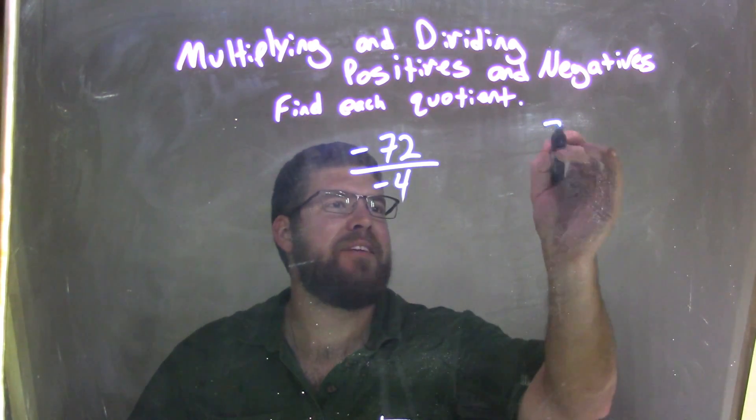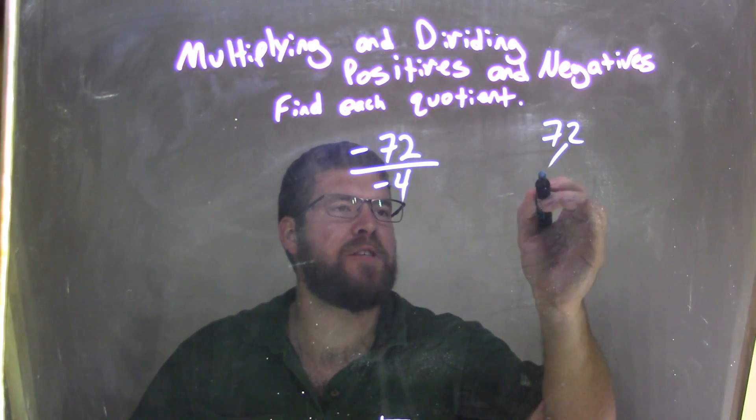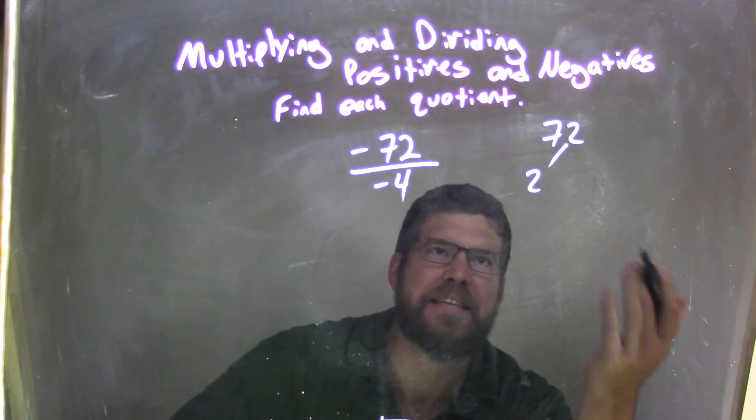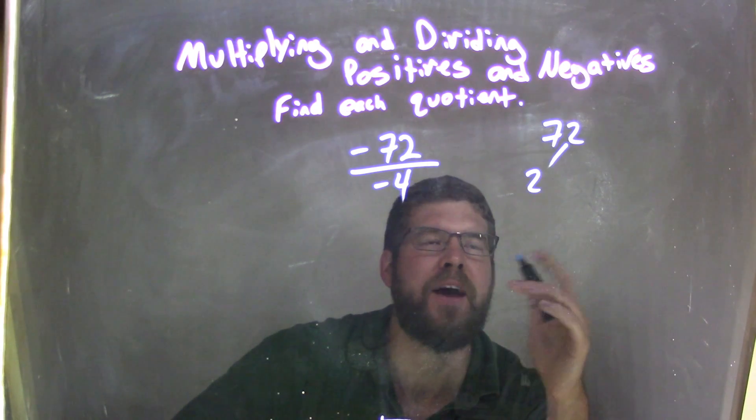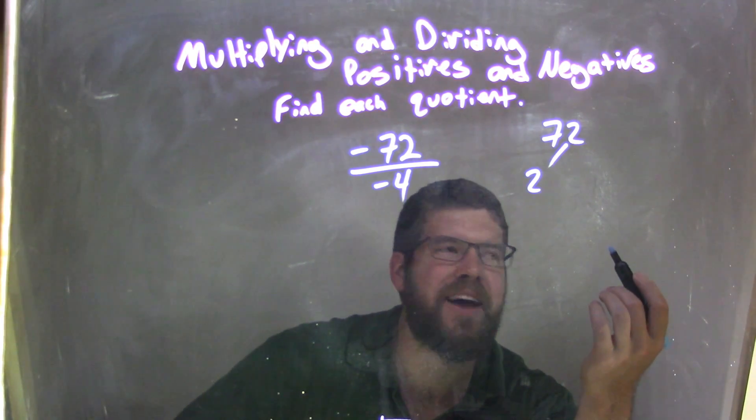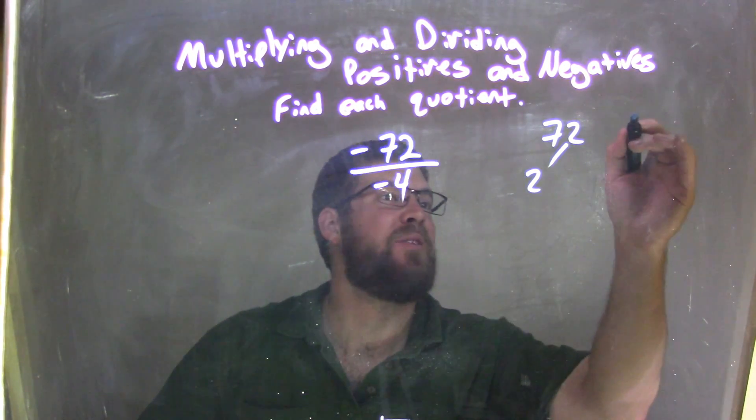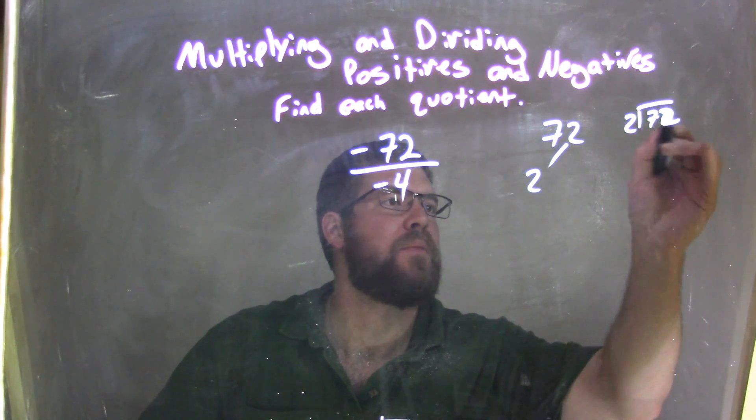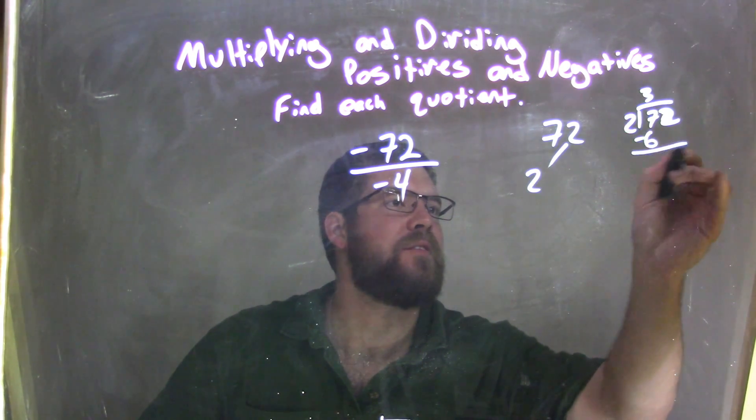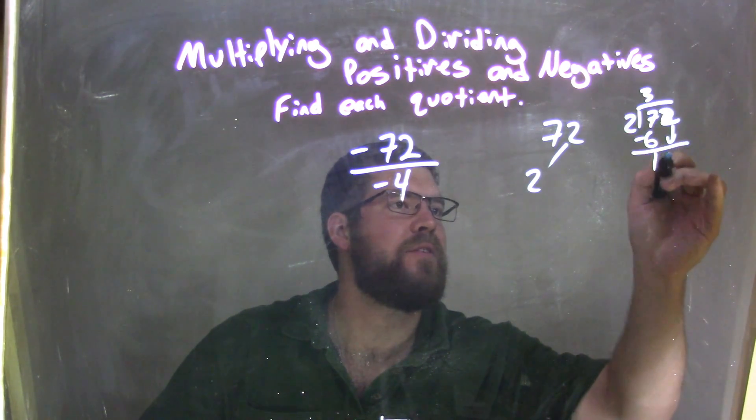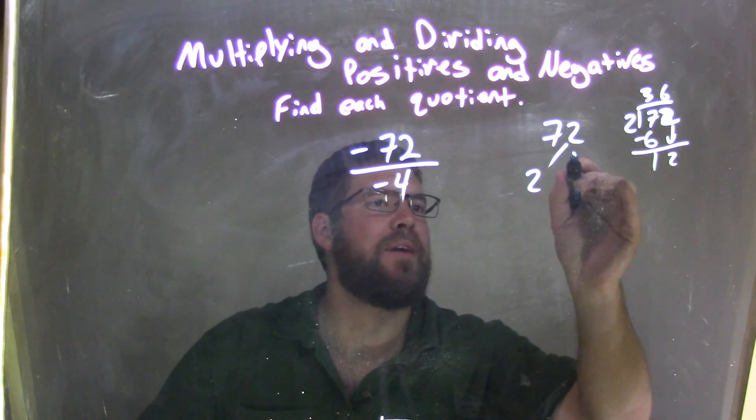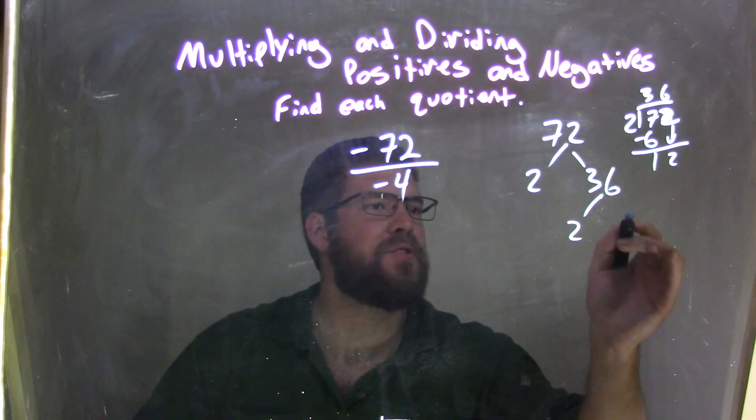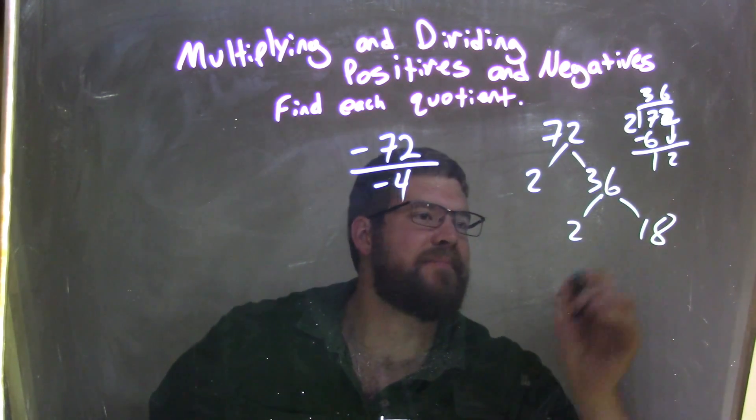What I do is say, okay, 72 I can break down to be 2 times something. 2 obviously goes into it because it's an even number. 2 goes into 7 three times, so I can do my little long division here: 2 into 72. We have 3 times 6 minus, bring down the 2, and 2 goes into 12 six times, and we have 36. And 36 I can break up again to be 2 and 18.